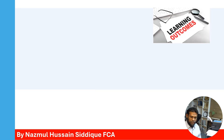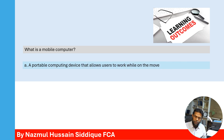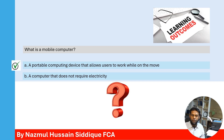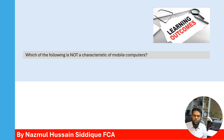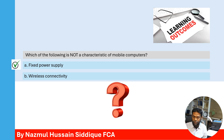Now let's test our learning objectives. Question 1: What is a mobile computer? Option A — a portable computing device that allows users to work while on the move. Option B — a computer that does not require electricity. The correct answer is Option A: a portable computing device that allows users to work while on the move. Question 2: Which of the following is not a characteristic of mobile computers? Option A — a fixed power supply. Option B — wireless connectivity. The correct answer is Option A; a fixed power supply is not a characteristic of mobile computers.